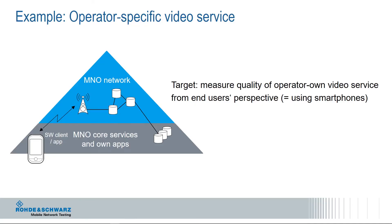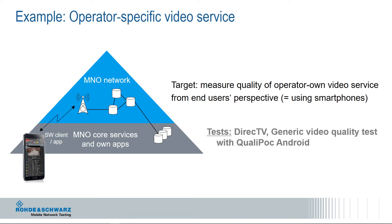The next layer is the applications layer — first, for the MNO's own services or applications. Our example is still video quality, and some operators already offer their own video service, often a live TV service. An example here is DirecTV by AT&T in the United States. The suitable tests directly measure the performance of this video application over the mobile network. Please be aware that you are testing the full chain from the video client on the phone, over the mobile operator network, to the corresponding video server — a true end-to-end measurement where all components may affect performance.